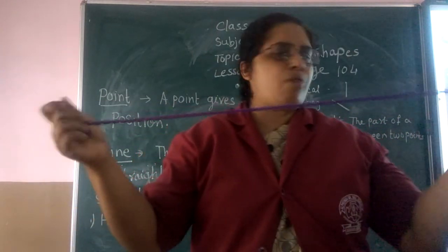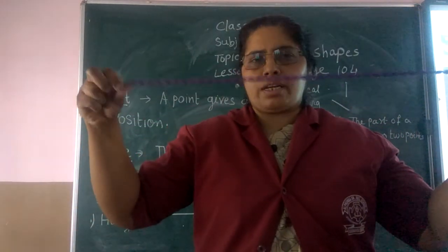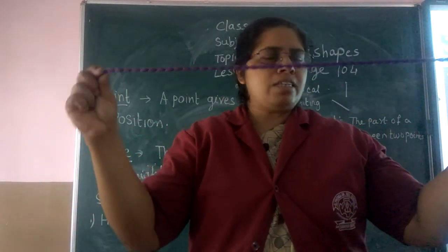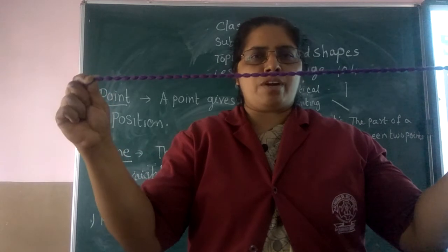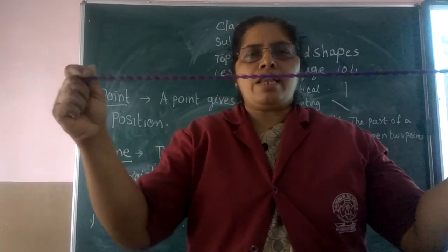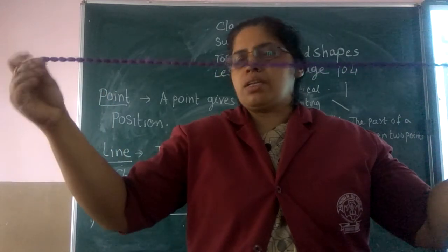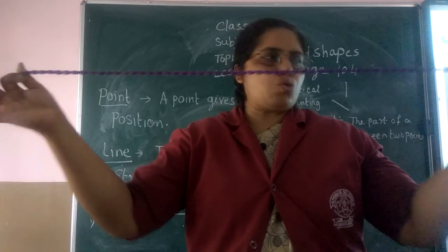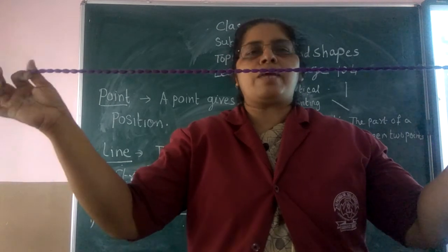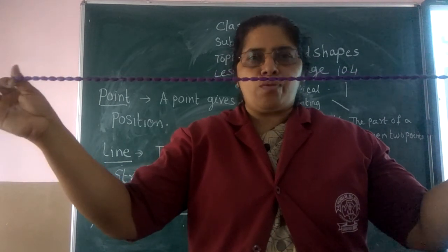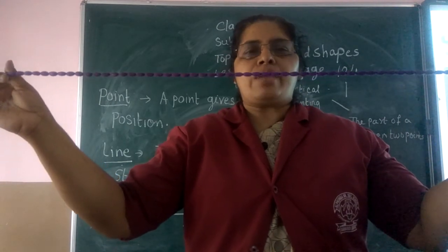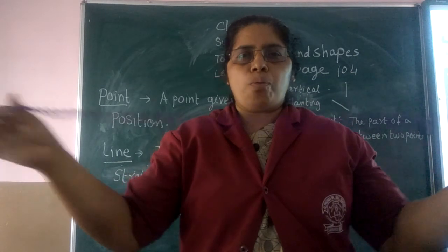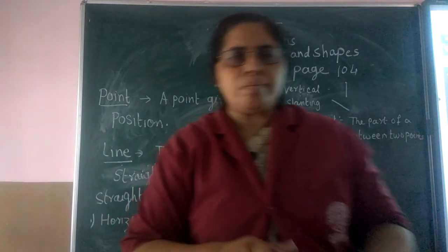A line starting from one point to another — there are two points. Starting from one point and going to another point, this is called a line segment. With two points we can draw only one line, and that is called a line segment. Hope you understood.